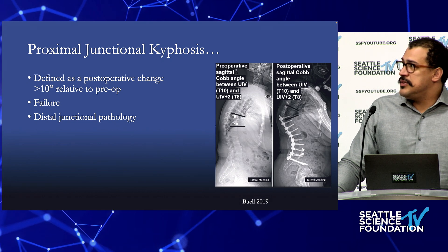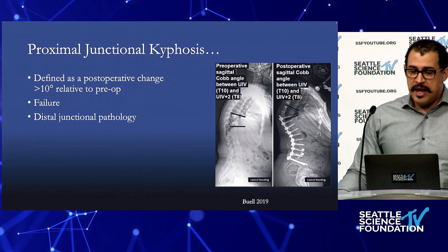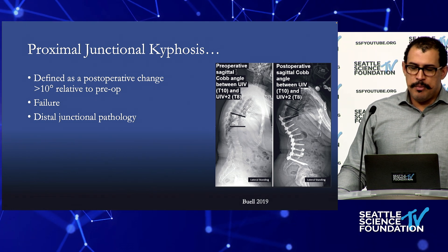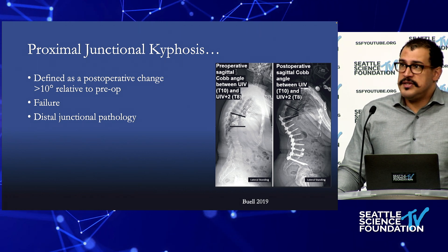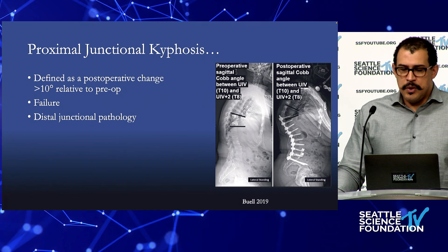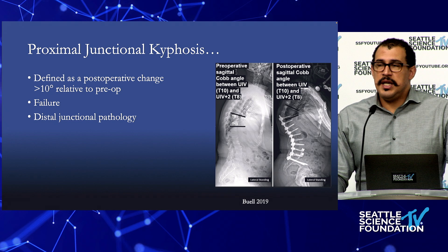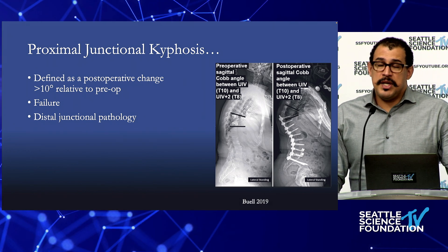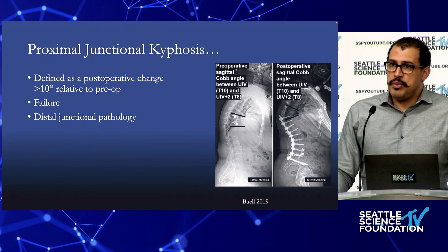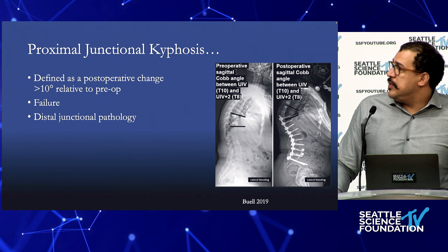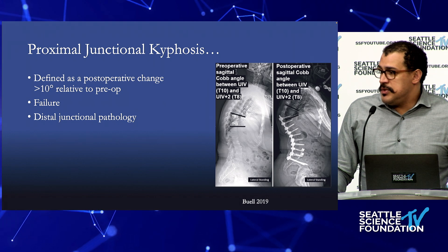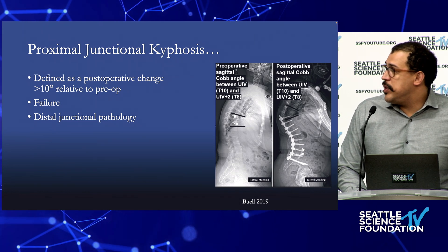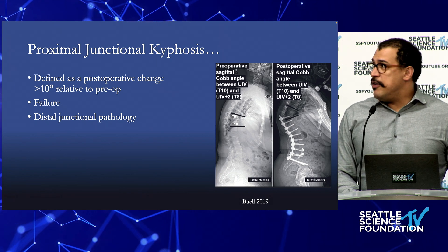Proximal junctional kyphosis is defined as a 10-degree change relative to the preoperative angle when looking at the upper instrumented vertebra (UIV), with UIV-plus-two being two levels higher. Where it becomes proximal junctional failure is when we move from a radiographic to a clinical diagnosis. If someone has rod protrusion through the skin or a neurologic deficit that's very clear, but it can be more subtle — someone noticing progression, bothered by posture, or sagittal position in space being off over time. When additional surgery is required, that's when we transition from proximal kyphosis to proximal failure.